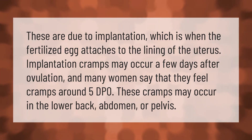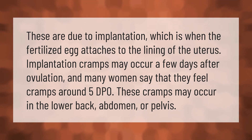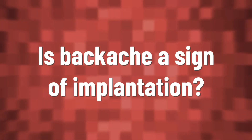These are due to implantation, which is when the fertilized egg attaches to the lining of the uterus. Implantation cramps may occur a few days after ovulation, and many women say that they feel cramps around 5 DPO. These cramps may occur in the lower back, abdomen, or pelvis.